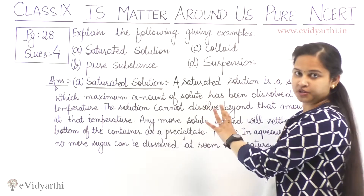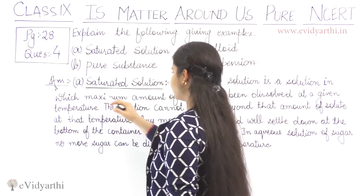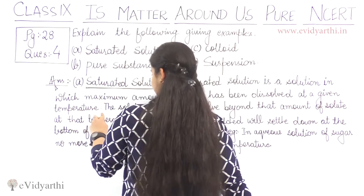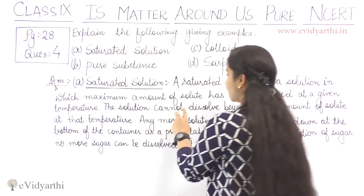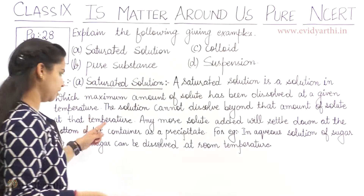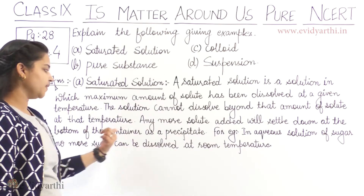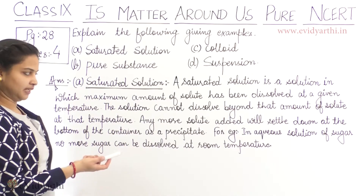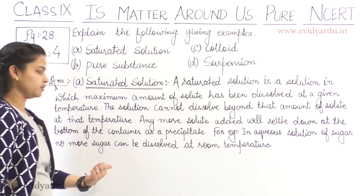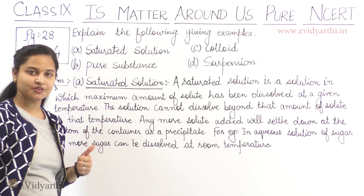Saturated solution: A saturated solution is a solution in which the maximum amount of solute has been dissolved at a given temperature. The solution cannot dissolve beyond that amount of solute at that temperature. Any more solute added will settle down at the bottom of the container as a precipitate. For example, in an aqueous solution of sugar, no more sugar can be dissolved at room temperature.